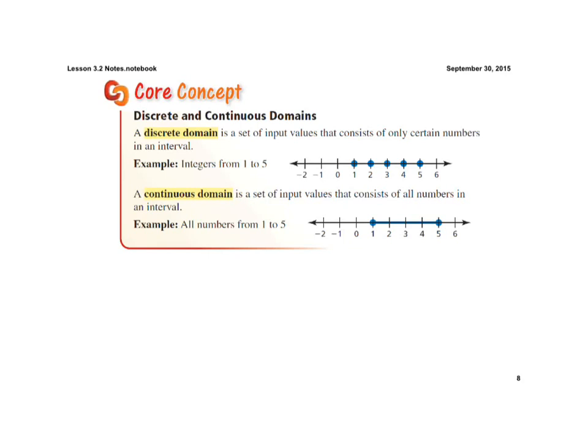Now, if we look at a continuous domain — let's say you go to Orange Leaf and they say you must buy at least 1 ounce of yogurt, but you cannot buy more than 5 ounces. When you're filling up your yogurt cup, you don't have to buy exactly 1 ounce or exactly 2 ounces or exactly 3 ounces. They'll measure it and then charge you. Since we're able to buy different amounts of yogurt, we have what we call a continuous domain.